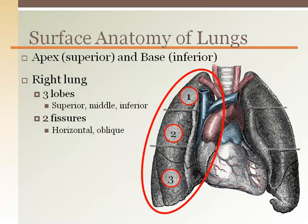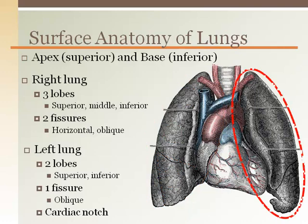There are two fissures separating them: the horizontal and oblique. The left lung must make room to accommodate the heart since it tips leftward. The left lung has two lobes, superior and inferior, with an oblique fissure separating them. The medial surface is called the cardiac notch.